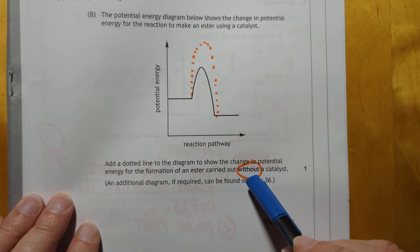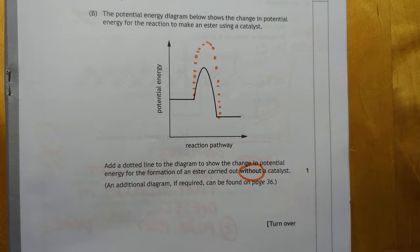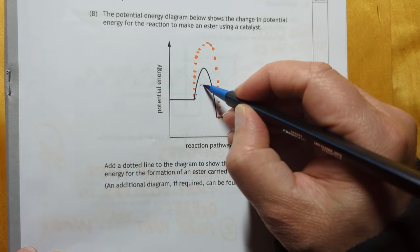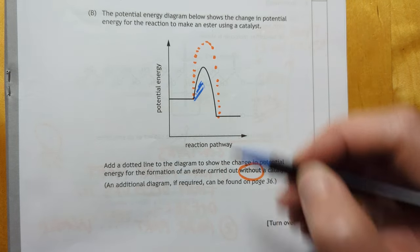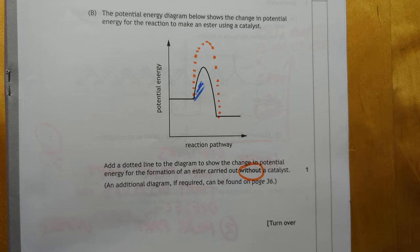There you go. This is without the catalyst. This is sneaky. This is a reversal of what they normally do. They're hoping to get you to trick you into doing one lower. That's not the case. You've got to do it higher. Oops.